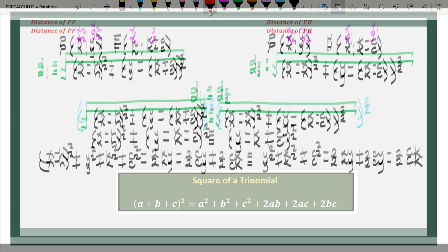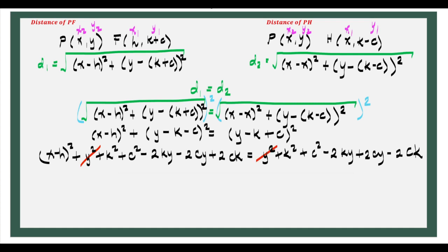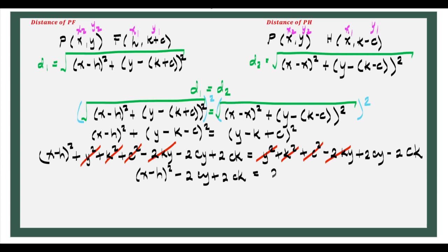Let us now simplify. Y squared can be cancelled, K squared also, and C squared — this is because of transposition. If you transpose Y squared to the left side, that gives Y squared minus Y squared, which is 0. Negative 2KY would also be cancelled. So what's left to work out would be the squared quantity of X minus H, minus 2CY plus 2CK, is equal to 2CY minus 2CK.